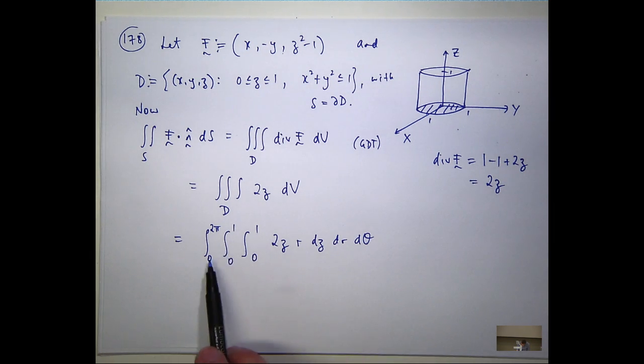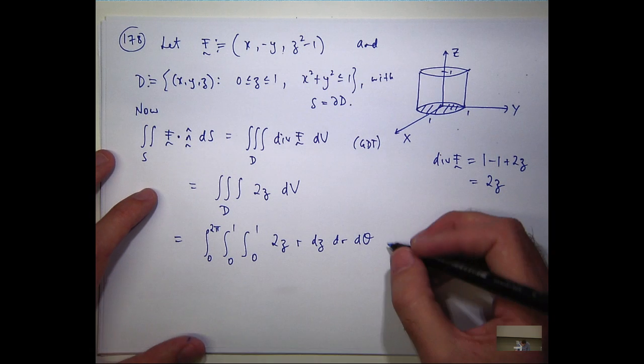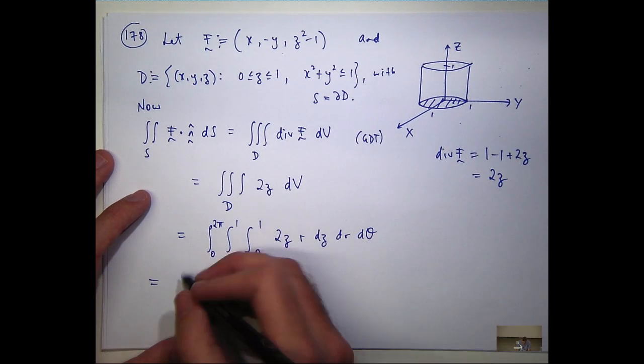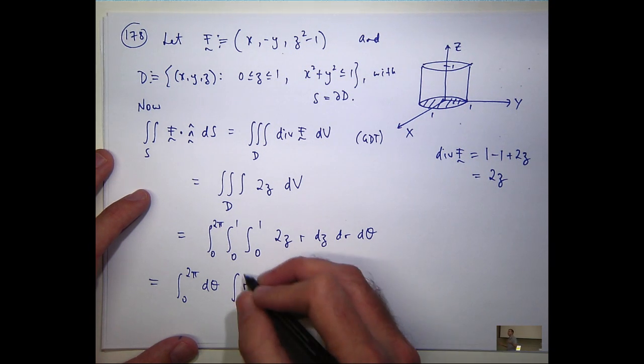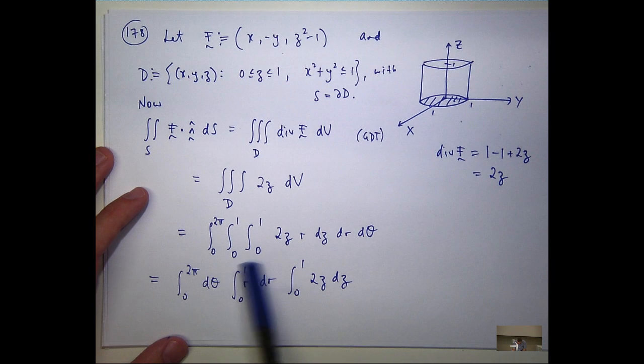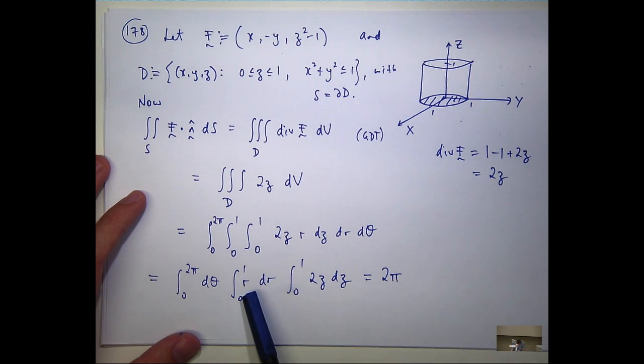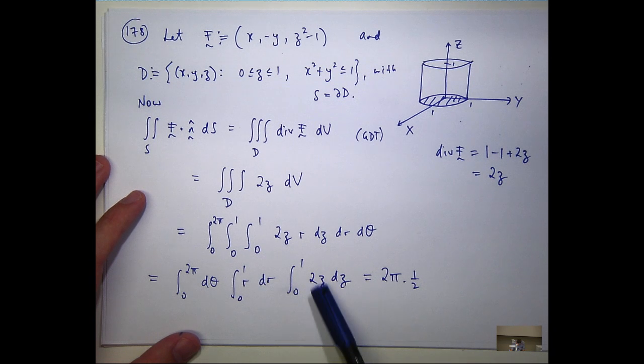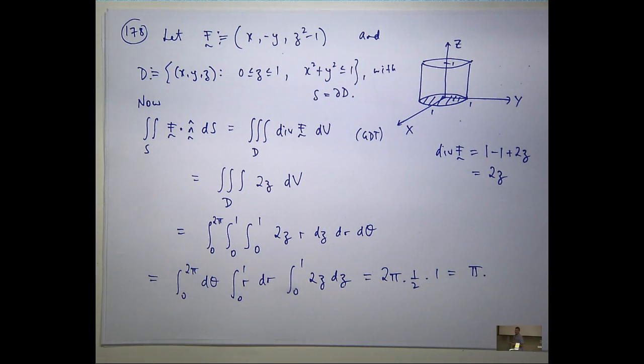Now, firstly, notice that we have constants as the limits of integration, and we've just got a product of a function of z with a function of r. So actually, I can simplify this and just write it like this, as the product of three integrals. So let's do the dr then. So what I'll do is evaluate this integral, this integral, this integral, and multiply them all together. Pretty easy. So the first one is going to be 2 pi. The second one is going to give me a half r squared, which is just going to be a half. And the third one is going to give me z squared, which will just give me one in the end. So there you go.